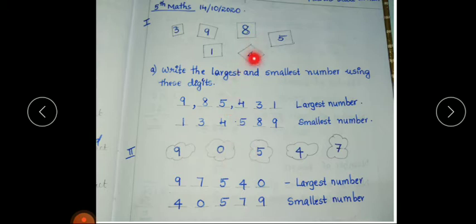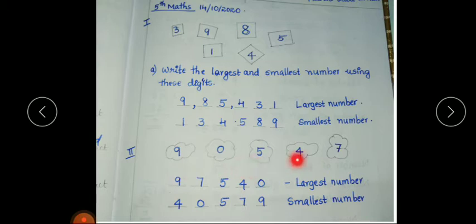Second question: using these digit cards, we have to again write the largest and smallest number. One difference is that here zero is given. To write the largest number, the biggest digit is nine, so write nine first, then seven, then five, then four, then zero. There is no problem with writing the largest number.